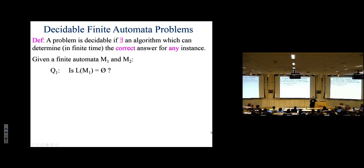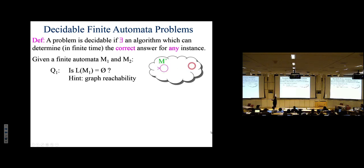The key insight is path-finding: look for a path from the start state to any final state. If such a path exists, whatever characters are on it will spell out a string, and the language won't be empty. This is essentially graph reachability — find a path from the start state to some final state, any final state.